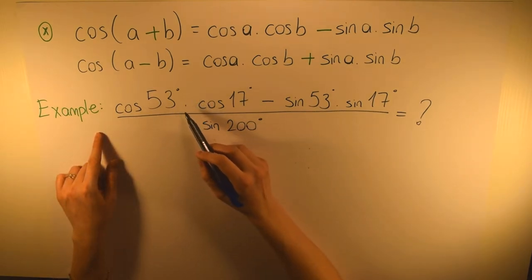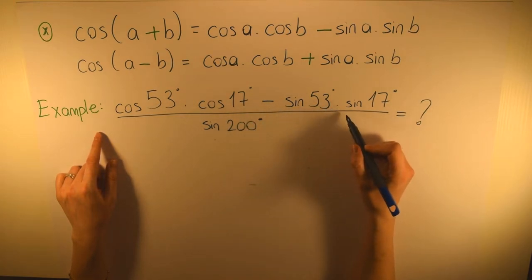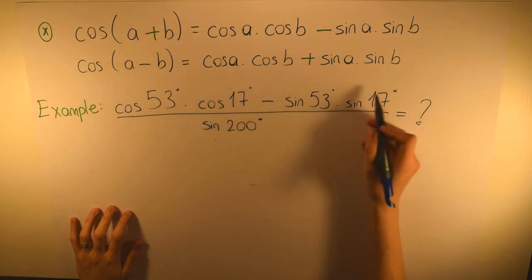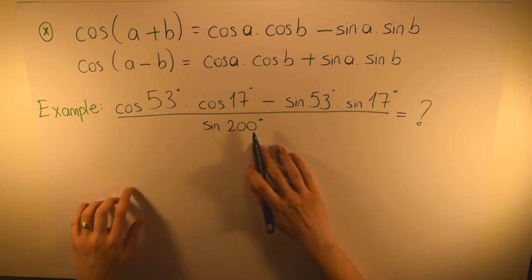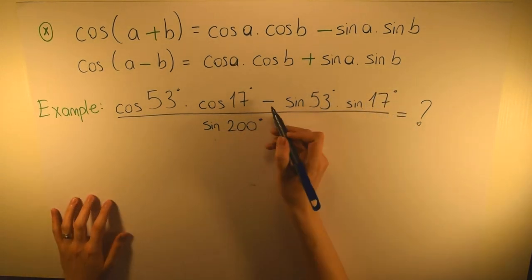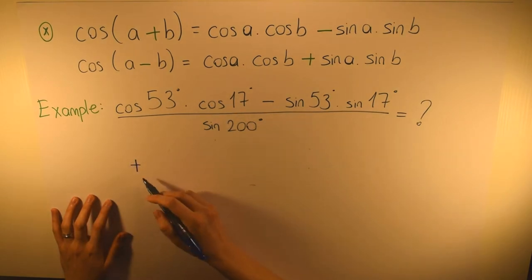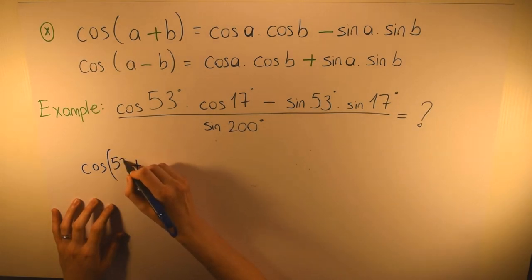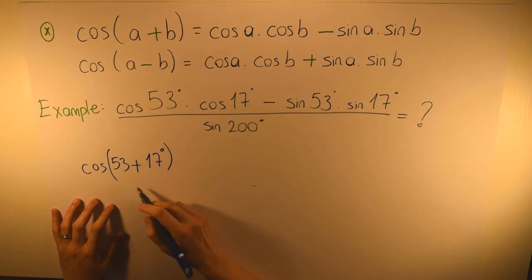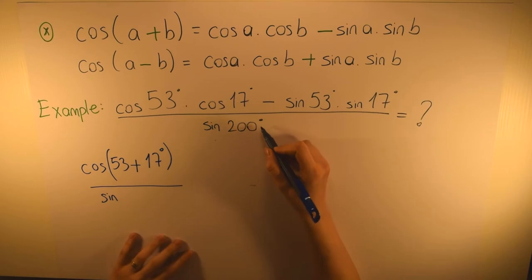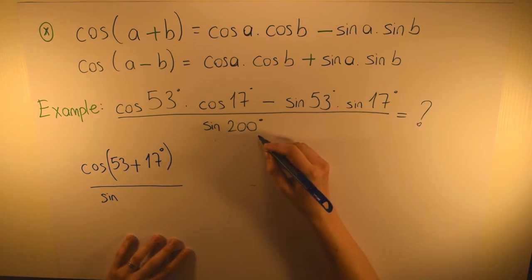Here we have: [cosine 53° · cosine 70° − sine 53° · sine 70°] / sine 200°. The numerator is an expanded cosine formula. Since we have cosines on one side, sines on the other, and a minus sign, this corresponds to cosine(a+b). So the numerator becomes cosine(53+70). For the denominator, 200 is close to 270 degrees, so we rewrite sine 200 based on the vertical reference at 270.